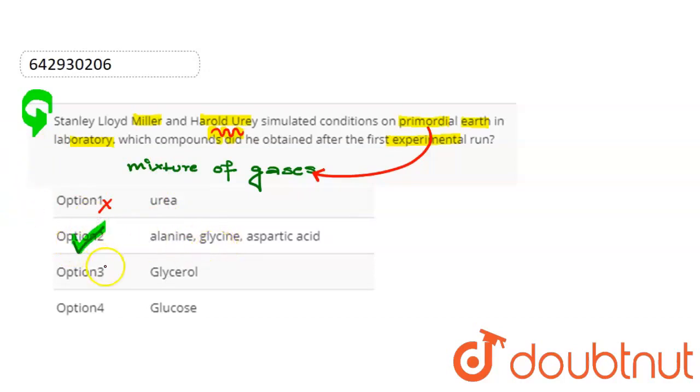These amino acids are alanine, glycine and aspartic acid. Third is glycerol, option is wrong. Last is glucose. Again, the option is wrong.